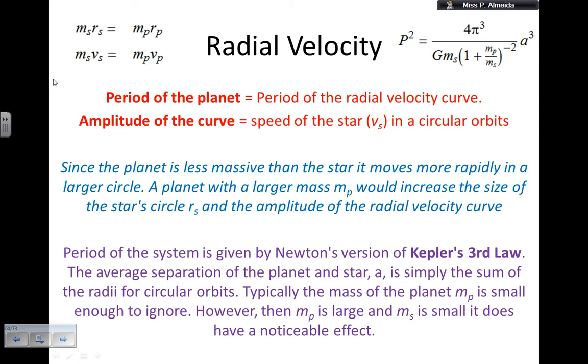So you don't have, if you're doing this at A-level because you're taking the astrophysics option, you don't need to know these formulas in this detail. You just need to have an idea of how the radial velocity method works in finding out the planets. So the planet's less massive than the star and it moves more rapidly in a larger circle. So the planet with a larger mass would increase the size of the star circle and the amplitude of the radial velocity curve. And then if I want to get the period of the system, I get by Newton's version of Kepler's third law, which is this one here on the top.